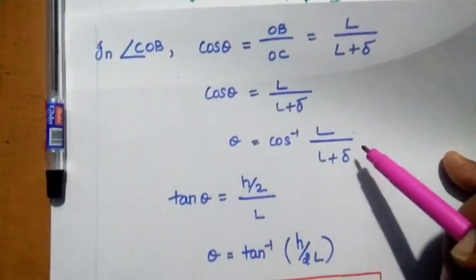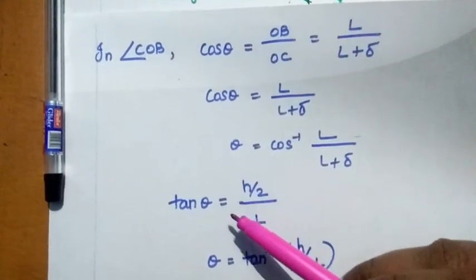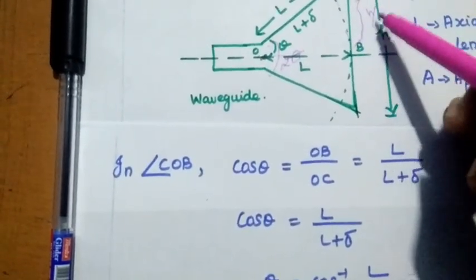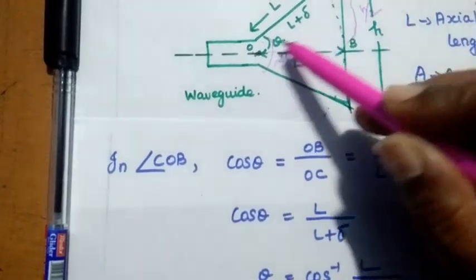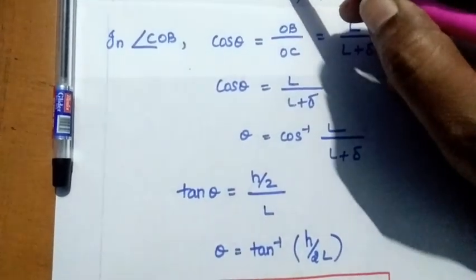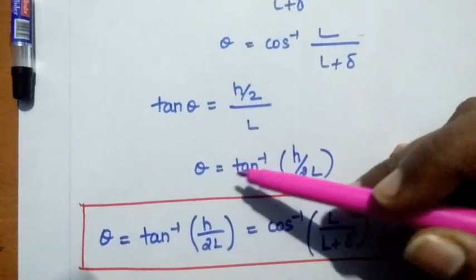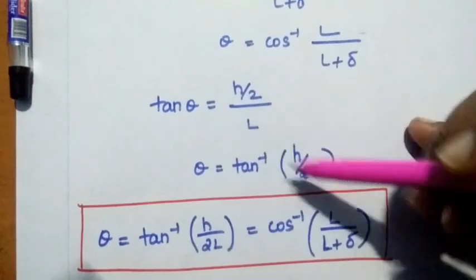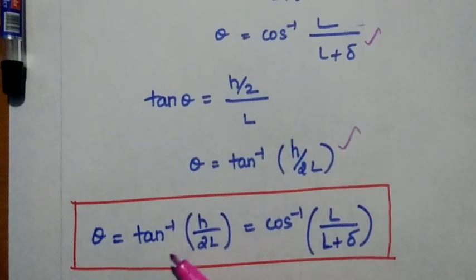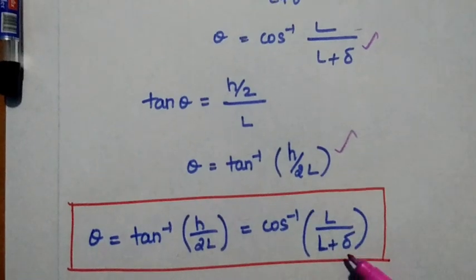Next, for the same right-angle triangle, tan theta equals the opposite side H/2 divided by the adjacent side L. So tan theta equals H/2L, meaning theta equals tan-inverse of H/(2L). Therefore, theta equals tan-inverse of H/(2L) equals cos-inverse of L/(L plus delta).